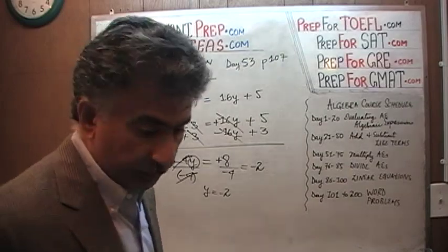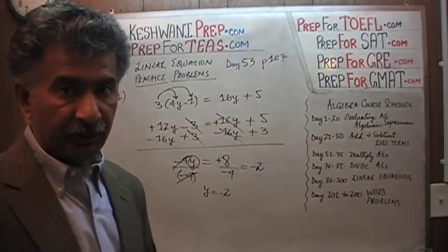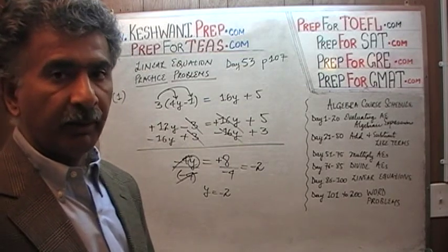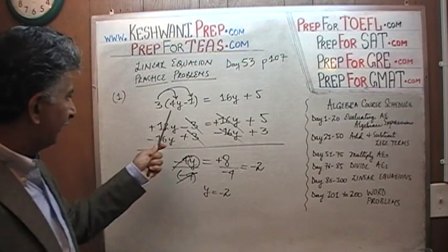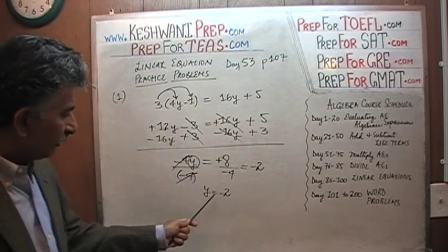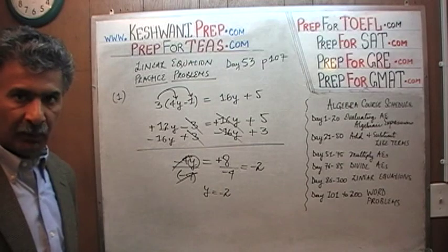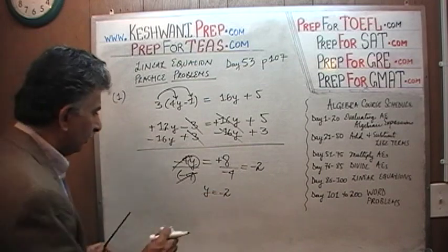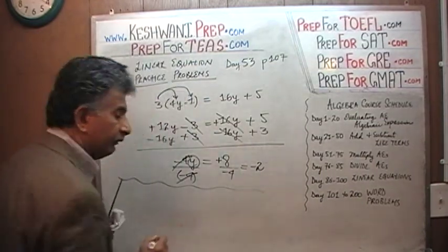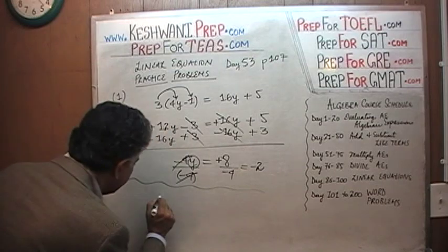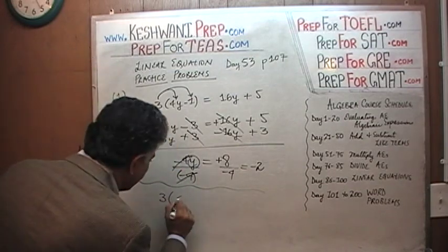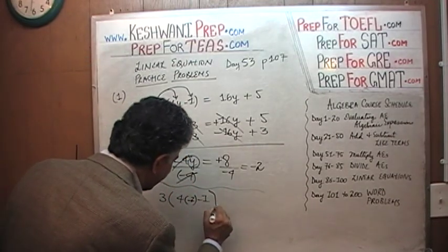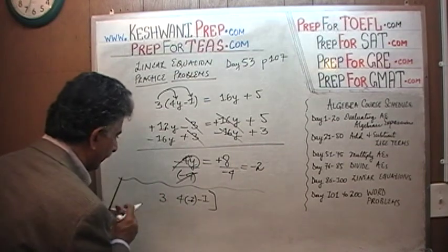The last thing we should do — if the time allows in the exam, if you have the extra few seconds — is take a moment to check your answer and make sure it's correct. We are going to put this value back into the original equation and see if y equals negative 2 satisfies it. So we have 3 times (4 times negative 2 minus 1).